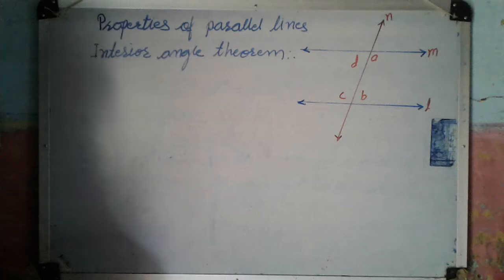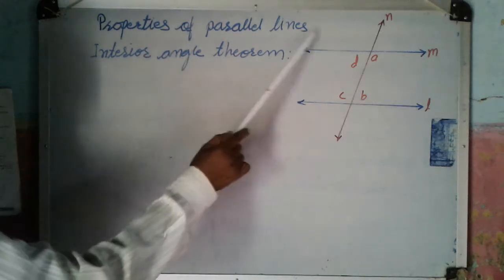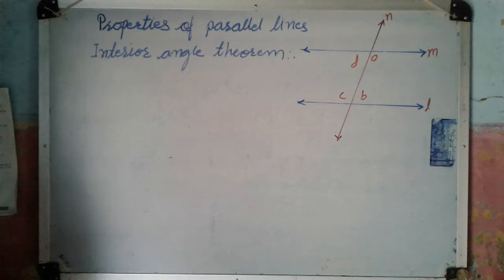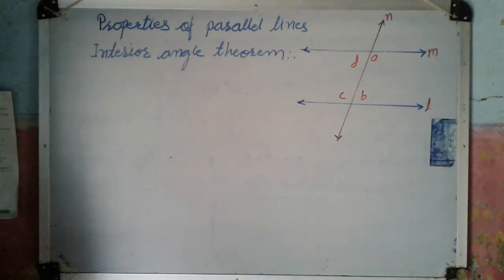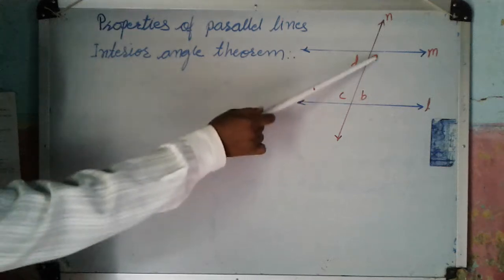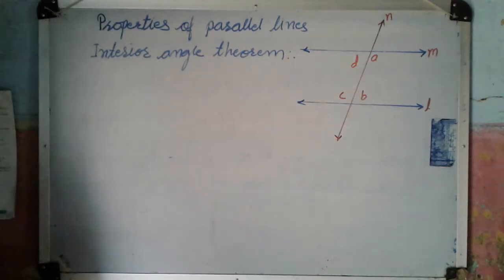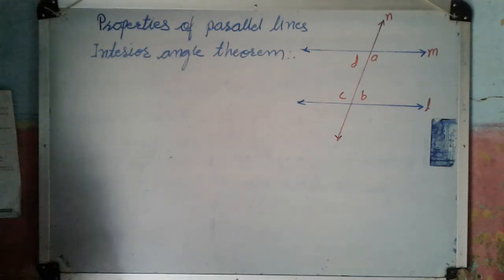We have to prove this. Here, as shown in the figure, line L and line M are parallel lines cut by a transversal. Angle A and angle B are interior angles formed on one side of the transversal, and angle C and angle D are interior angles formed on the other side of the transversal.